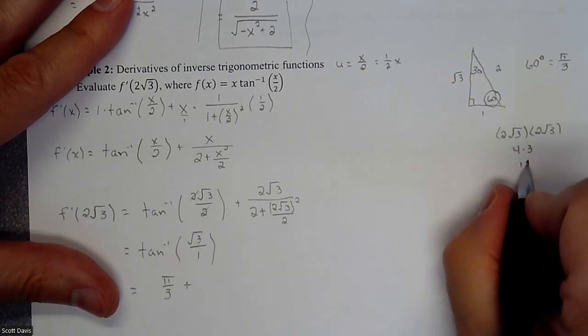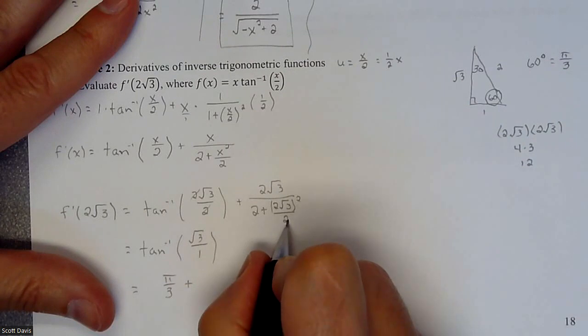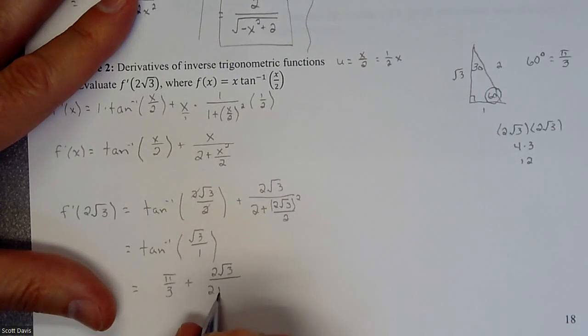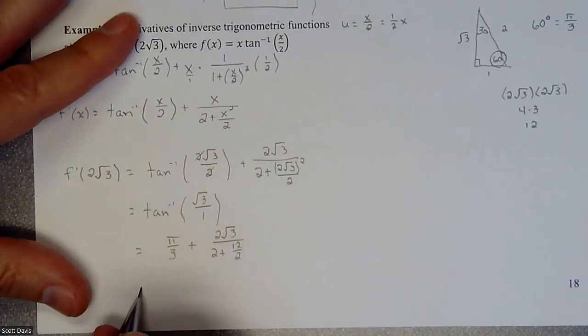So we're looking at 12 divided by two. So we have a two root three, and two plus 12 divided by two, is what we're sitting at. So let's keep on going.